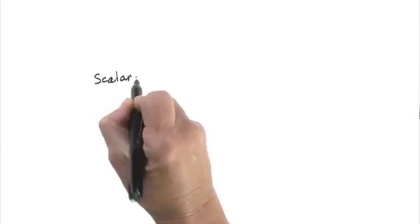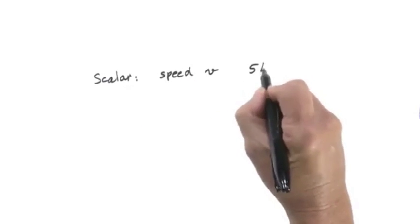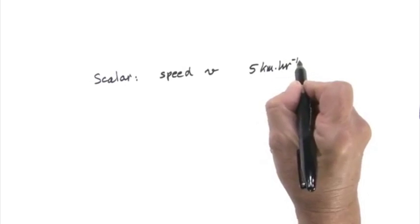Here's a very important distinction. Speed is an example of what we call a scalar quantity. It has magnitude or size, but no direction.